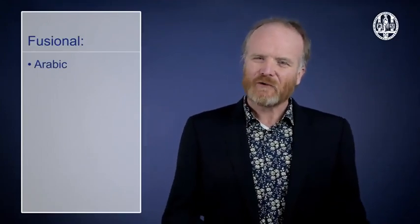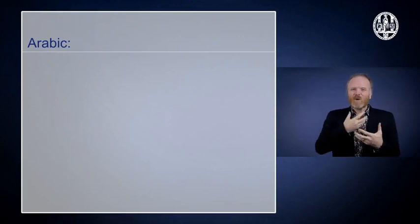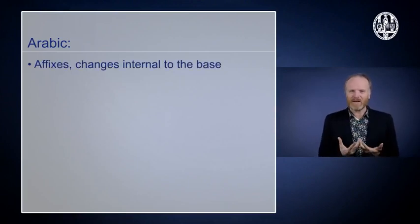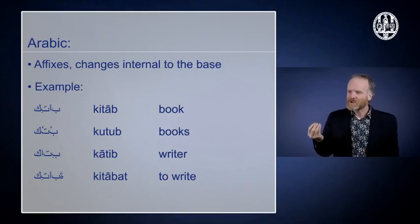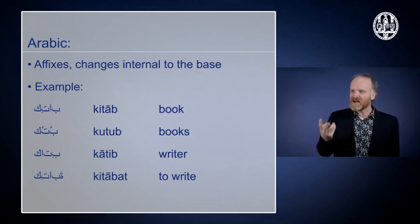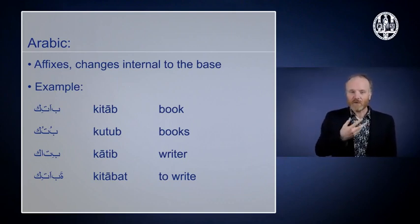The third type of language is called fusional. And the famous example of that is Arabic. In Arabic you don't just have affixes put before or after the base. But there are also things happening within the base, internal to the base. Here you see some examples. You see that to make books from book, you don't add a suffix or a prefix, but you change the vowels. And you can make another change of the vowels and you get writer or to write. Well, actually, to write also has an affix.